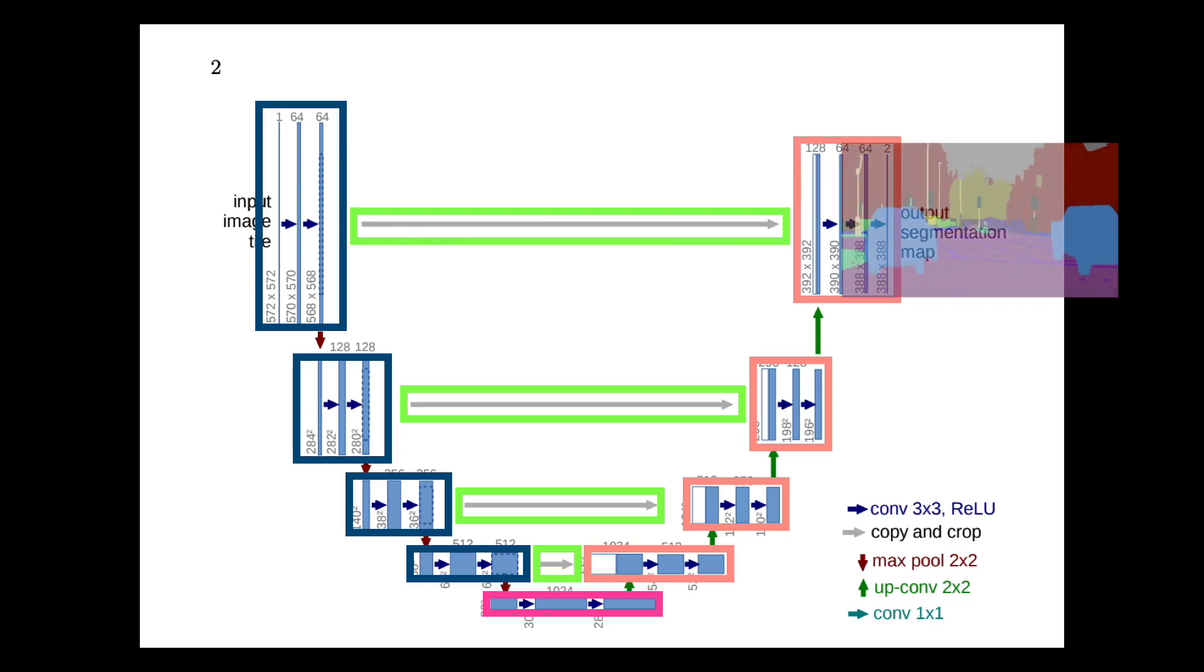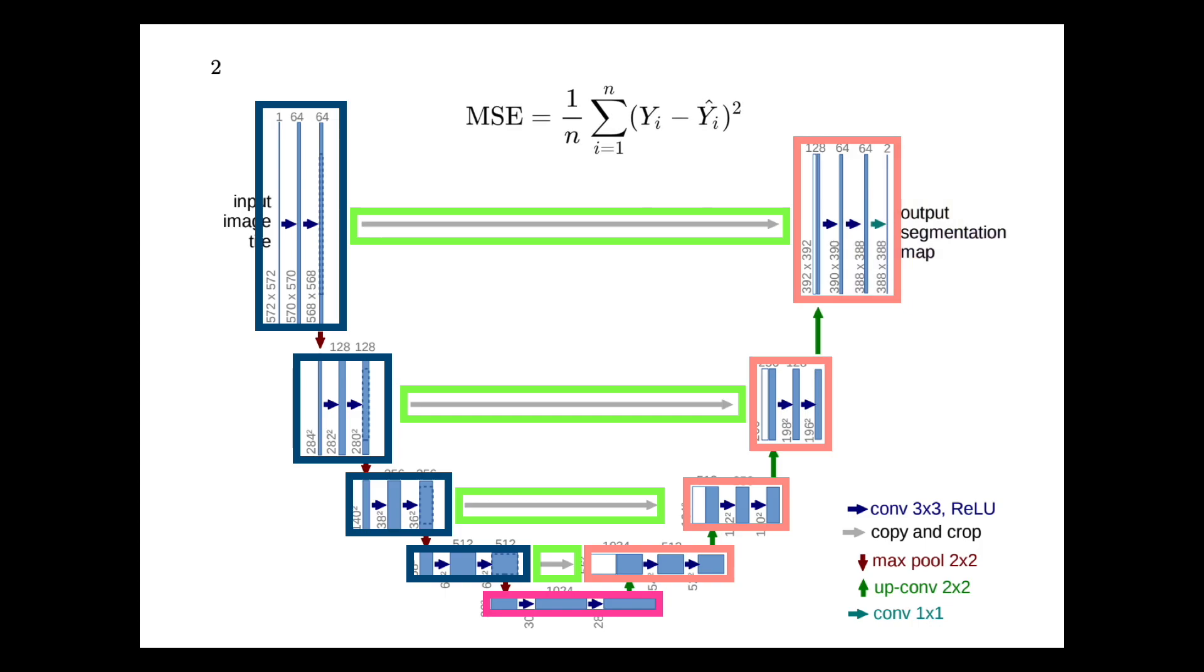The final layer produces the output, for example, this could be a segmentation mask. You can then simply calculate your loss with respect to a ground truth mask and back-propagate the gradients through the network to improve your model's predictions.